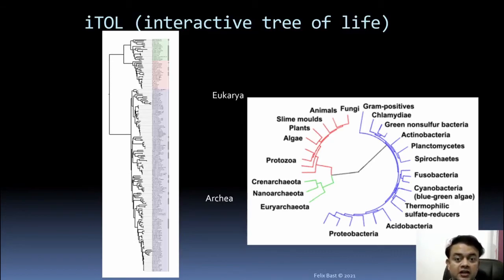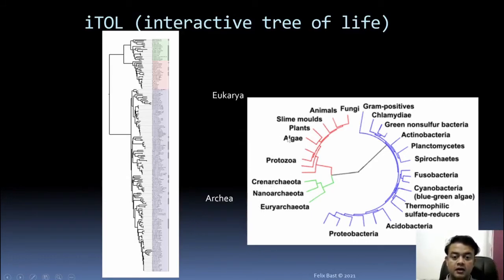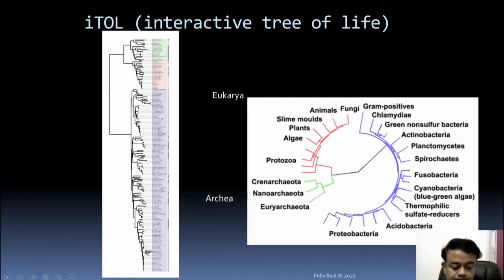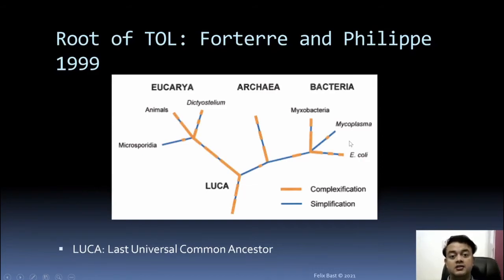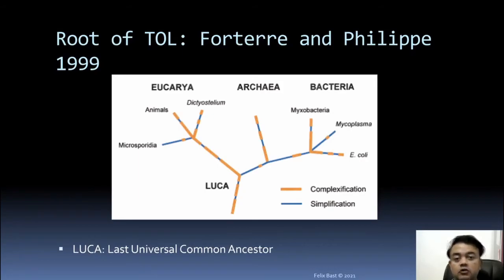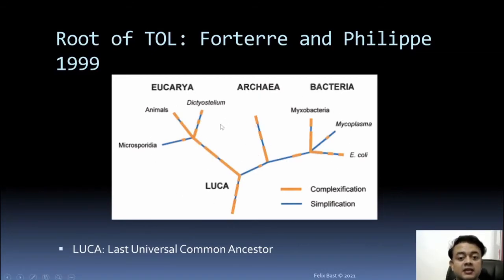The Interactive Tree of Life (ITOL) shows the two alternate viewpoints on the root. In one representation — Archaebacteria and Eukaryotes (plants, animals, fungi, protozoa) are grouped in one domain, while Eubacteria (the real bacteria) form another major domain. In Forterre and Philippe's 1999 alternative, Eukaryotes are separate while Archaea and Bacteria are grouped — similar to Cavalier-Smith's approach of grouping Archaebacteria and Eubacteria together.